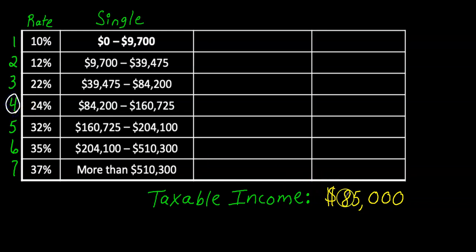Let's think about this. $85,000 is somewhere between $84,200 and $160,725. So once I've identified the row I just get rid of everything beneath it because I've identified tax bracket four or row four. I don't need these other rows because they didn't make enough money to use these rows.